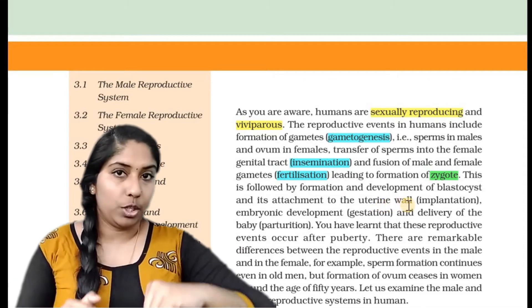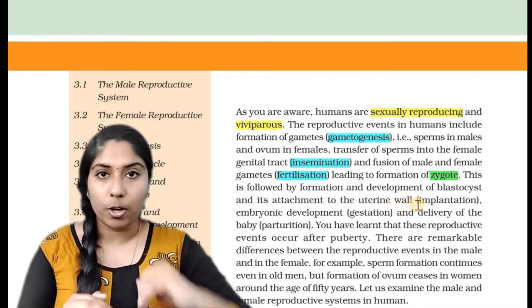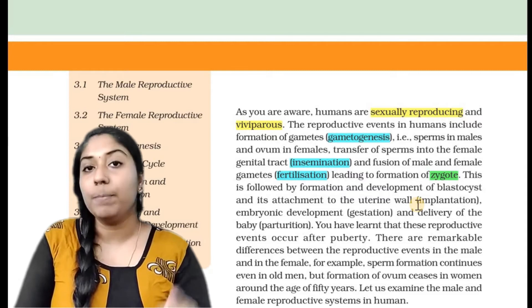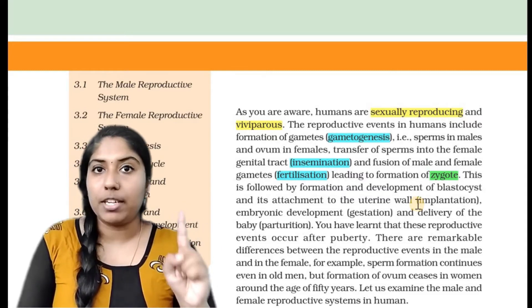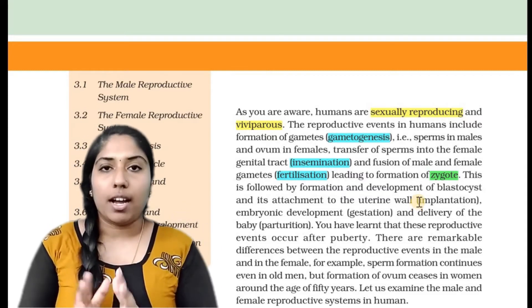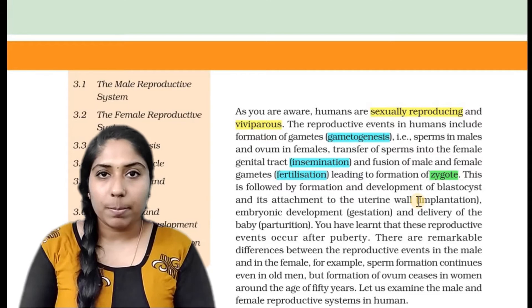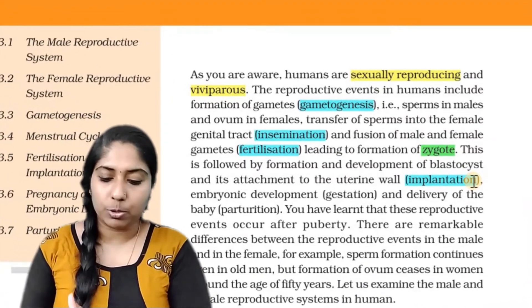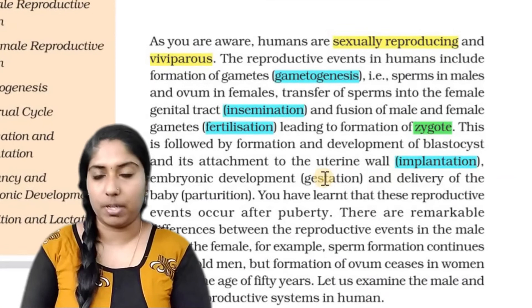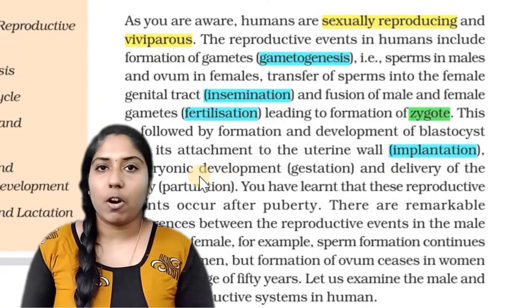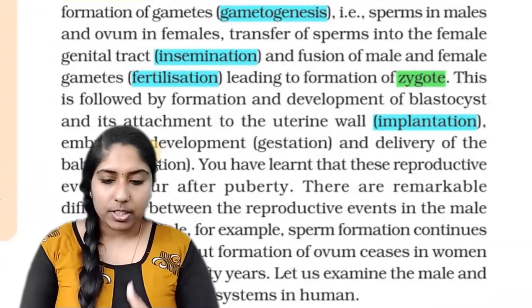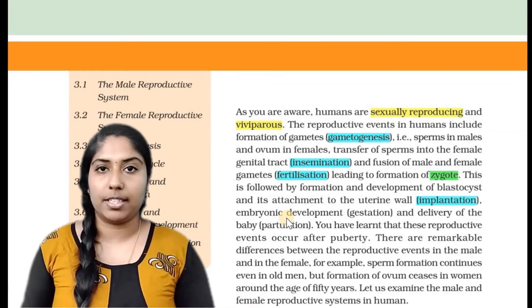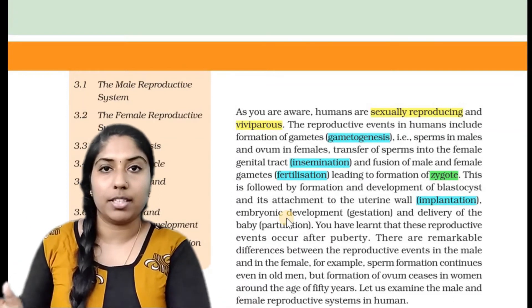Then the blastocyst moves and travels through the fallopian tube to the uterine wall.